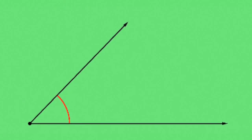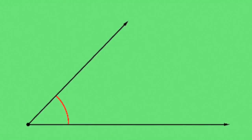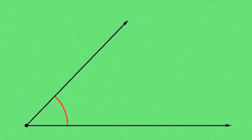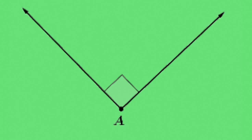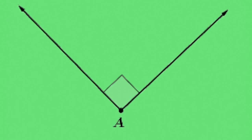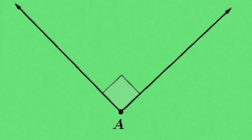Acute angles are the smallest of all of the angles which we will be discussing today. Recall that a right angle is an angle whose measurement is exactly 90 degrees. While often times we will draw these right angles using horizontal and vertical lines, a right angle could be drawn at any orientation.